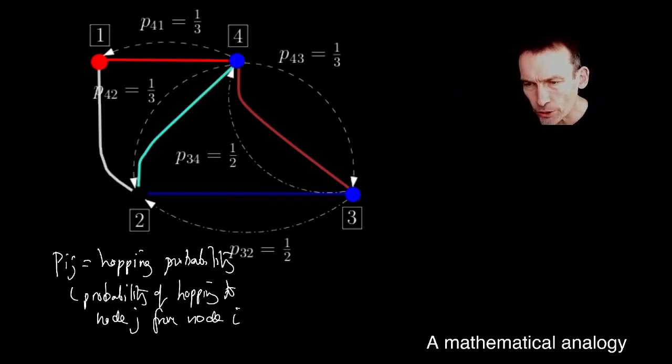If you look at the hopping probabilities from node 3, there's two probabilities there. There's P32, the probability of hopping to node 2, which is a half, and P34, which is the probability of hopping to node 4 in this random walk.